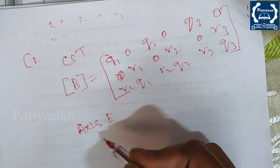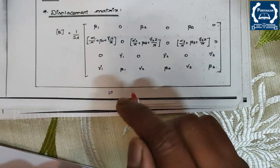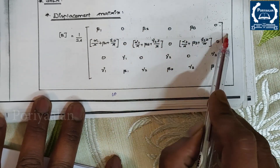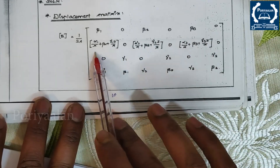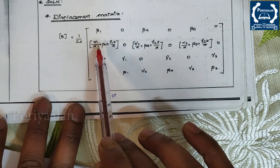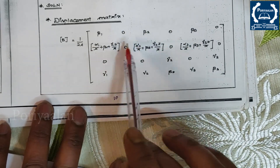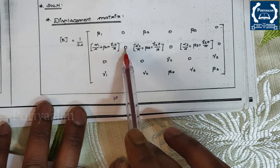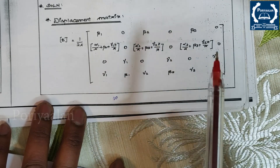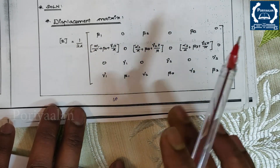For the Axisymmetric element, the B matrix formula is (1/2A) times a matrix containing beta1, beta2, beta3, gamma values, and an additional row with N1/r̄, N2/r̄, N3/r̄ terms using the alpha values. We substitute values of alpha, beta, and gamma along with the r̄ and z̄ coordinates into this matrix.